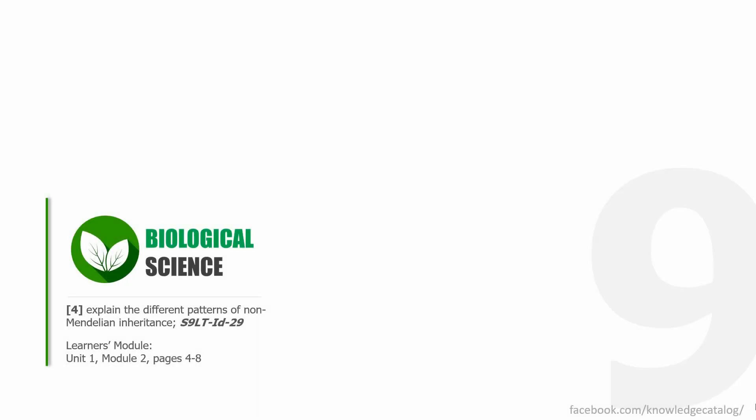Welcome to the Knowledge Catalog. This is a continuation of the series Grade 9 Science. Actually, this is more like Grade 9 Biology. This is still Biological Sciences, and this is our fourth learning competency, which is towards explaining the different patterns of non-Mendelian inheritance. If you have your learner's module with you, open them in Unit 1, Module 2, pages 4 to 8.